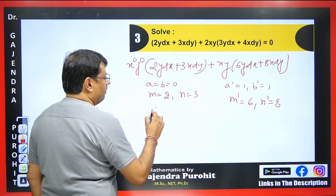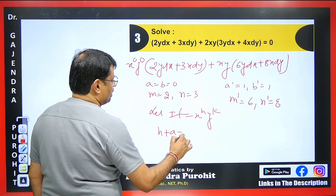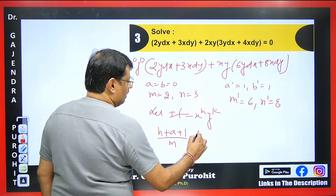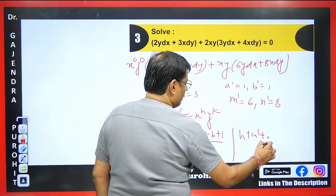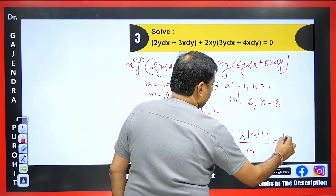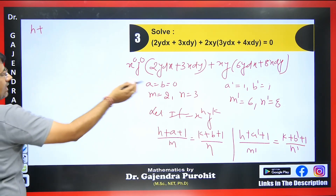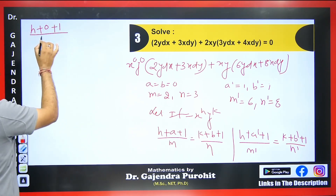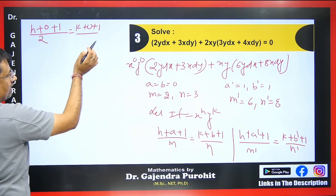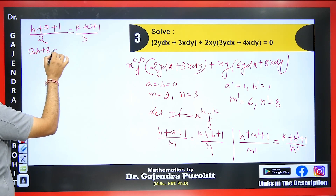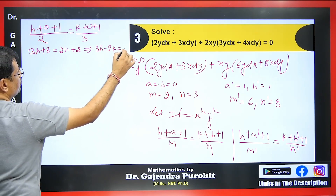Let the integrating factor be x^h · y^k. We have the relationship: (h + a + 1) / m = (k + b + 1) / n. Substituting our values, the numerator becomes 1 and the denominator is 3 on one side. Multiplying through gives 3h + 3 = 2k + 2, which simplifies to 3h − 2k = −1. That is our first equation.